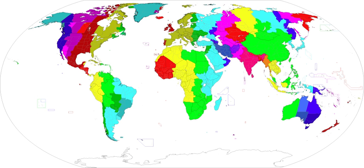European countries that observe UTC plus 3 as daylight saving time include Bulgaria, Cyprus, Estonia, Finland, Greece, Latvia, Lithuania, Moldova, Romania, and Ukraine.